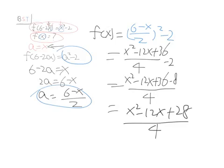Which equals x squared minus 12x plus 28 over 4. And we actually cannot further simplify this equation. So, that's pretty much the answer to f of x. It's actually pretty simple.